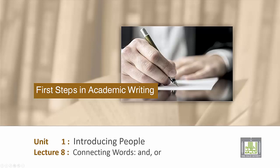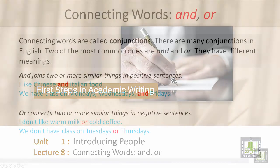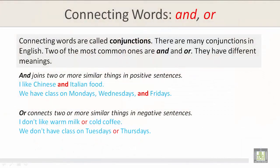Connecting words: and, or. Connecting words are called conjunctions. There are many conjunctions in English. Two of the most common ones are and and or. They have different meanings.